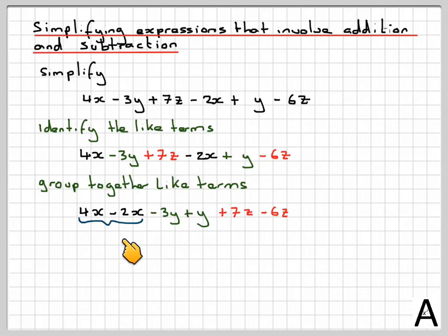4x minus 2x gives me 2x. Minus 3y and y will give me minus 2y. 7z minus 6z will give me 1z.